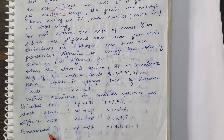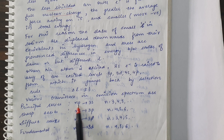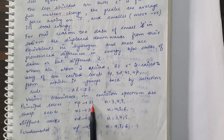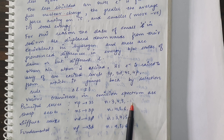The principal series means transitions where the electron in the higher excited state is in a P state and transitions down to 3S (the ground state). So transitions from NP → 3S, where N = 3, 4, 5, and so on.